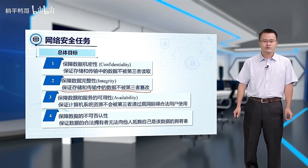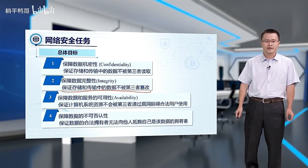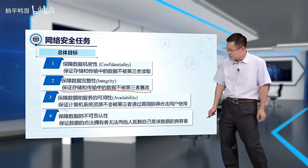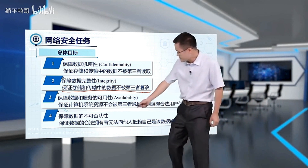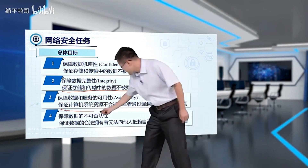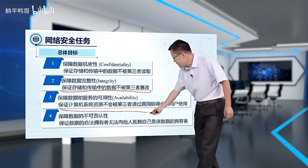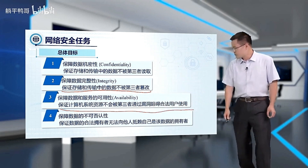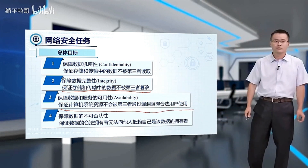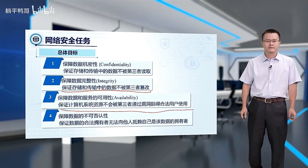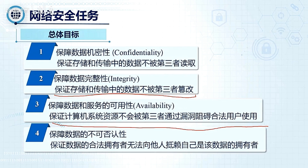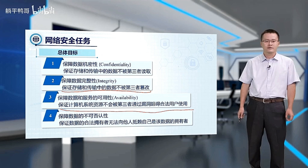Data availability is about ensuring system resources aren't blocked by vulnerabilities, allowing legitimate user access. Data non-repudiation ensures that data owners cannot deny their ownership to others.